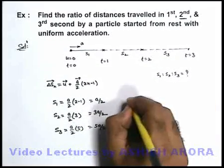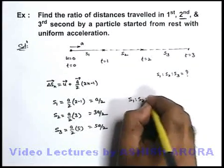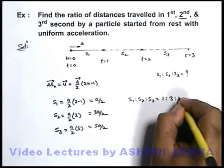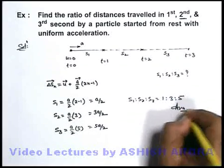So in this situation our ratio s1:s2:s3 can directly be written by these values as 1:3:5. This is the answer to this question.